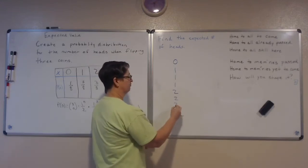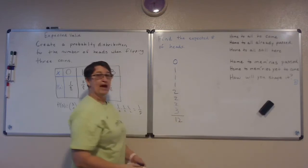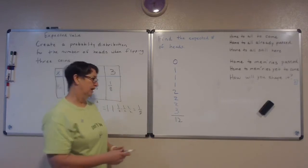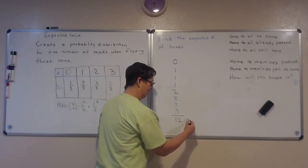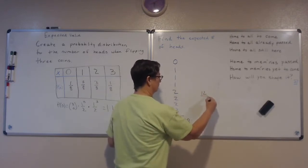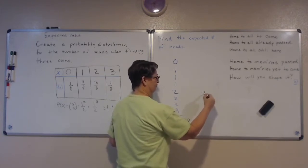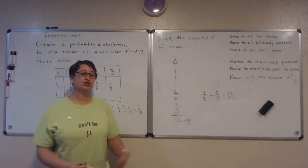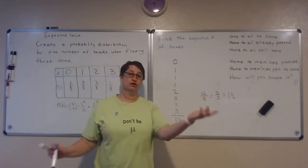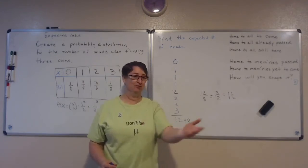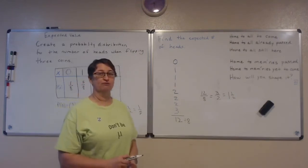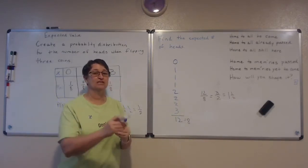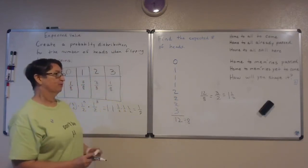Adding those values up: 0+1+1+1+2+2+2+3 = 12, divided by 8 gives 12/8 = 3/2 = 1.5. So on average we expect one and a half heads. Nobody can flip one and a half heads — that's not a value we can actually get — but on average, that's what we expect people to flip.